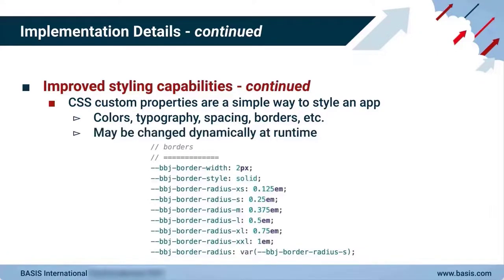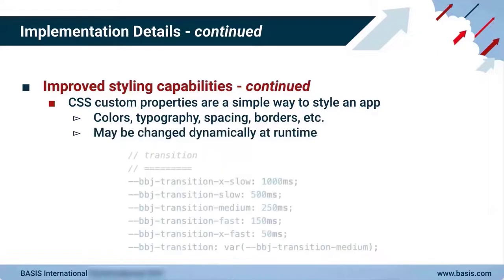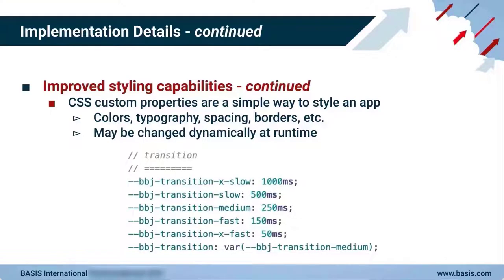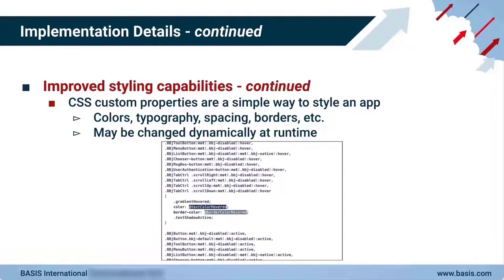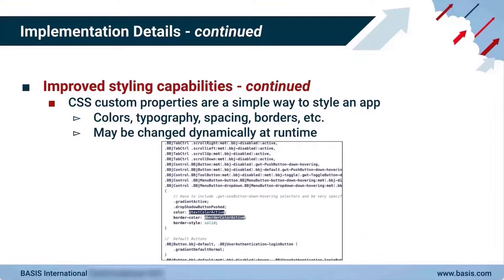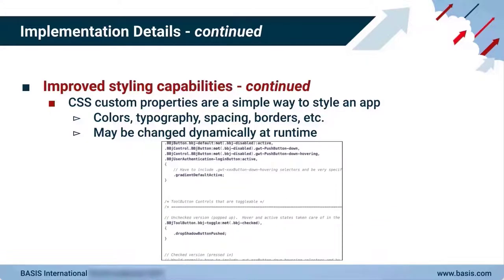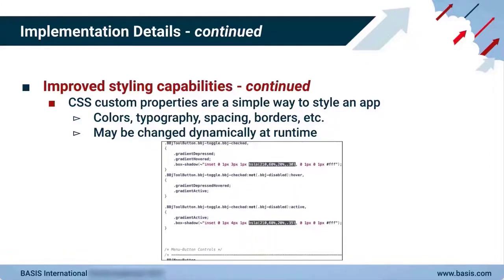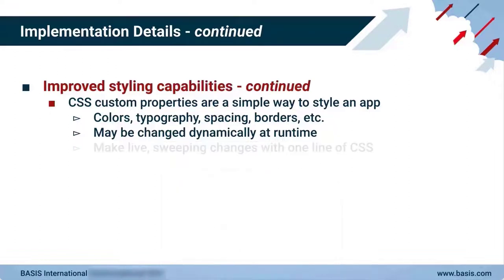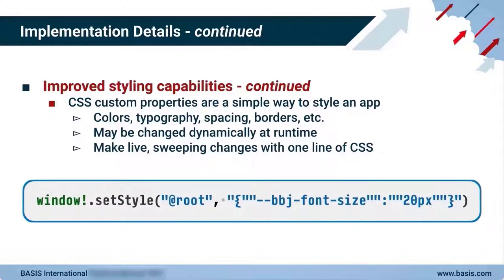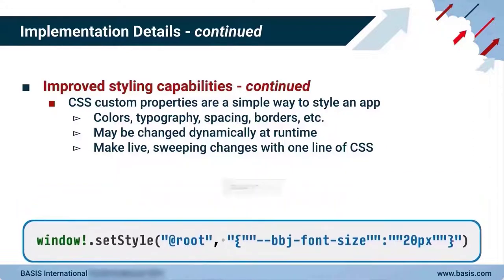In contrast, making these kinds of changes in BUI demands considerable knowledge of the default CSS file and would require changing dozens of lines in the 2,000-plus lines of CSS source code. But by taking advantage of custom properties, these changes are simple in the DWC. For example, you can assign the font size for every control by setting the value of the BBJ font size custom property either in an external CSS file or dynamically at runtime.